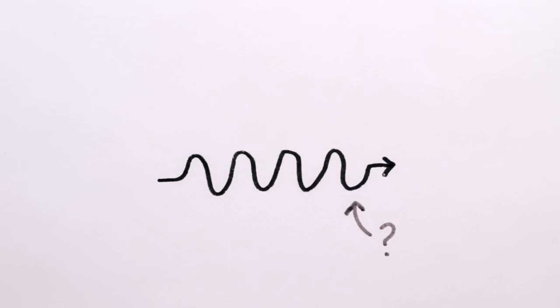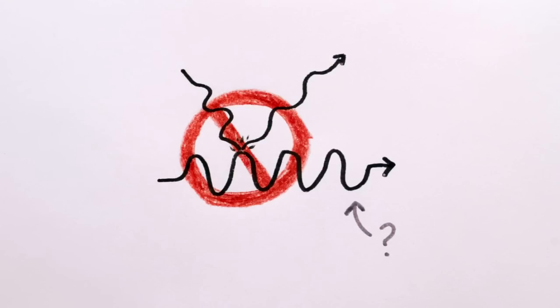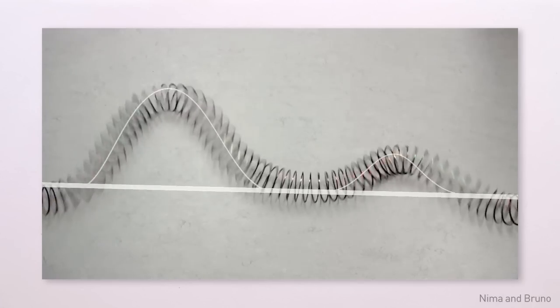But how do we see light itself? You can't bounce light off of light, just like you can't bounce slinky waves or ripples in the water off of each other, they just pass right through.